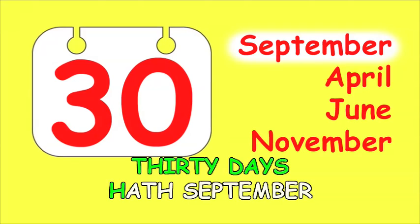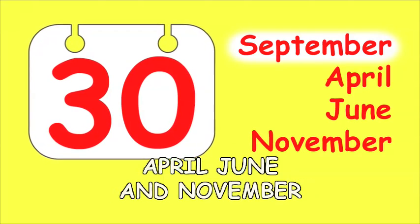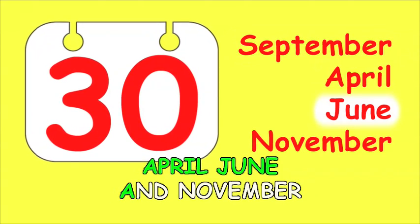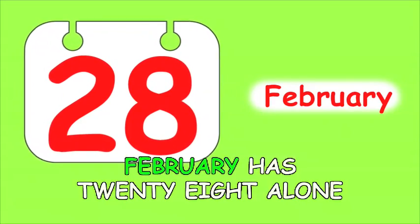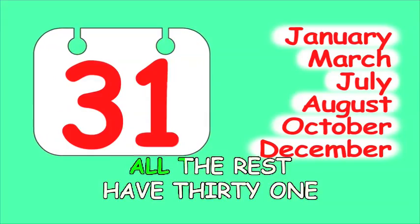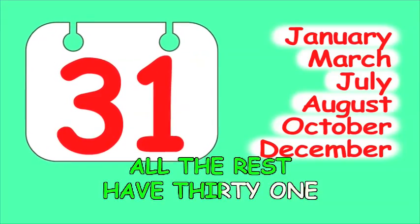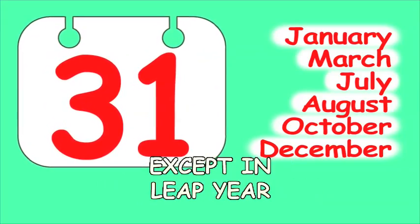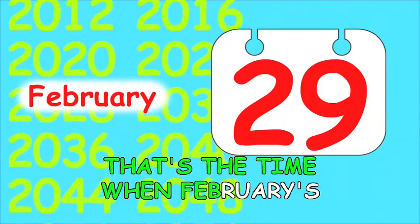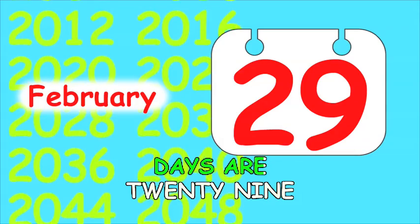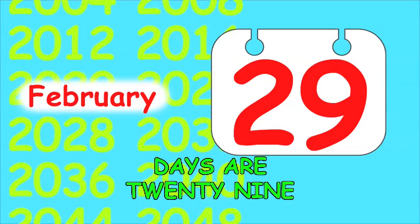30 days hath September, April, June and November. February has 28 alone, all the rest have 31. Except in leap year, that's the time when February's days are 29.